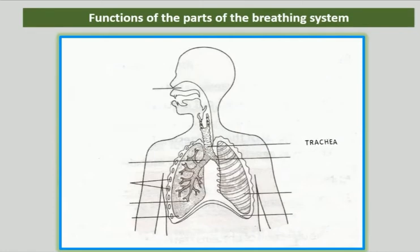The trachea subdivides into two tubes called bronchi. Each tube is called bronchus. Each bronchus enters a separate lung.